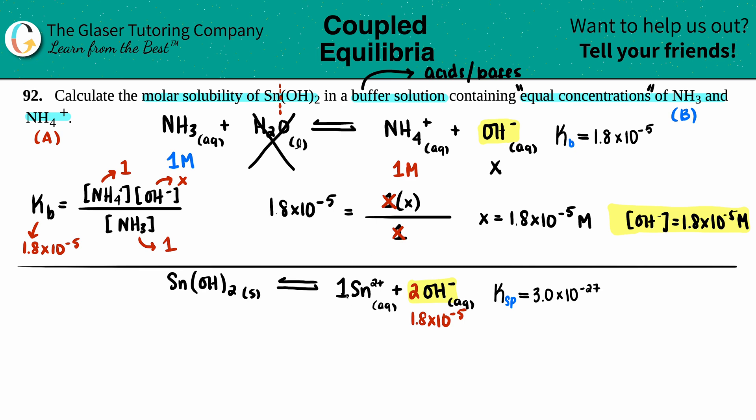We don't know what this is, so that's the variable. Label it as x. There was 1 Sn, so this has to be 1x, or just x. Remember, no solids allowed in your Ksp.